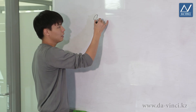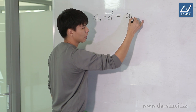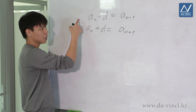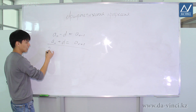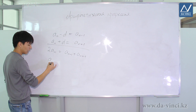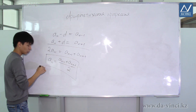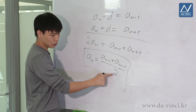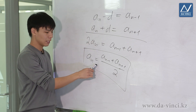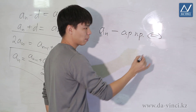Let's consider the expression an minus d. Subtracting the difference from the nth term gives the preceding term an minus 1, while adding d gives the following term an plus 1. Adding these two equations gives 2an equals an minus 1 plus an plus 1, so an equals (an minus 1 plus an plus 1) divided by 2. This means each term of the progression, except the first and last, is equal to the arithmetic mean of its two adjacent members. This is why the progression is called arithmetic. This property — called the characteristic property of an arithmetic progression — means a sequence is an arithmetic progression if and only if this expression holds.